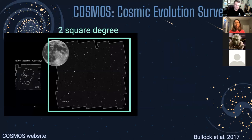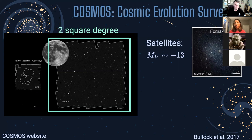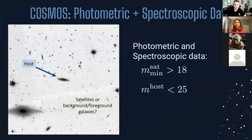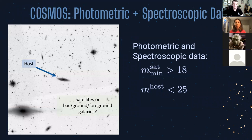COSMOS stands for the Cosmic Evolution Survey. It's the biggest survey done by the Hubble Space Telescope — a two square degree field with really wide image area and deep photometric and spectroscopic data. It allowed us to study satellites that were five magnitudes fainter than LMC-like hosts, out to a redshift of 0.8. We used spectroscopic data on our low mass host galaxies and photometric data for the satellites. We restricted the satellite's magnitude to be greater than 18 in apparent magnitude, which helped reduce contamination from Milky Way stars.